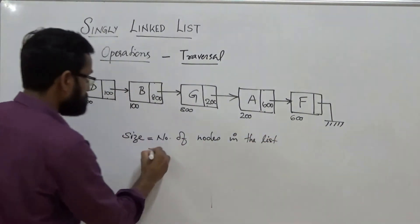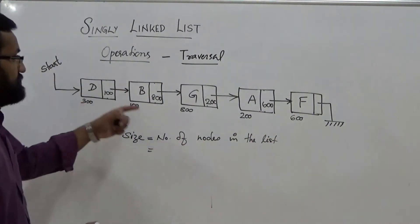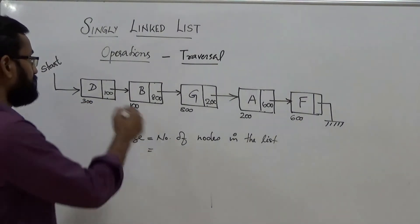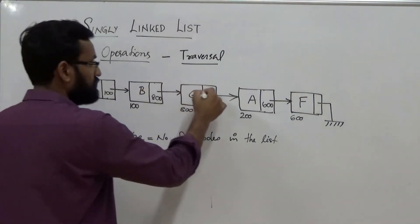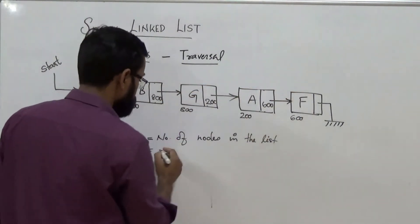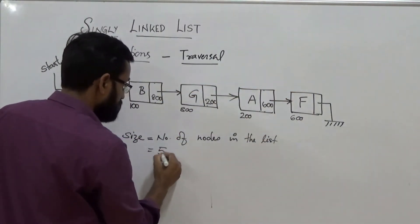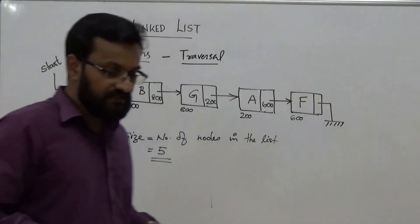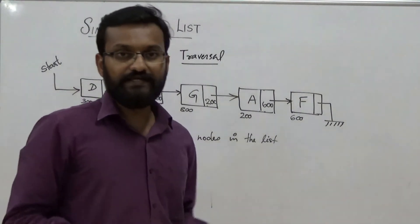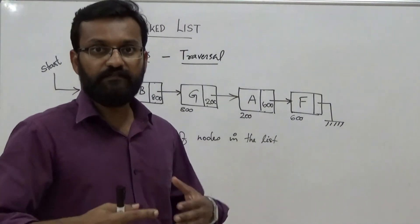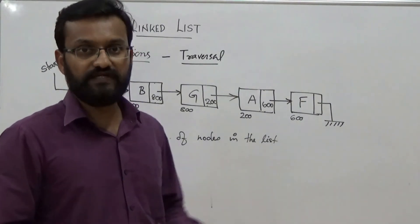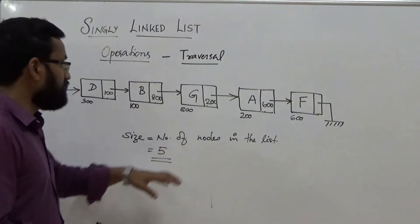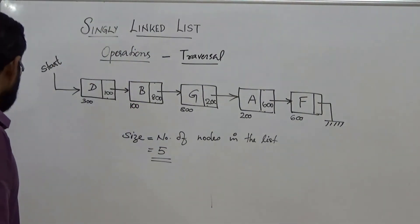In this case we have a list whose size is 5 — nodes 1, 2, 3, 4, 5. Operations performed on the linked list will in some cases depend on the size of the list. So size is defined as the number of nodes in the list.